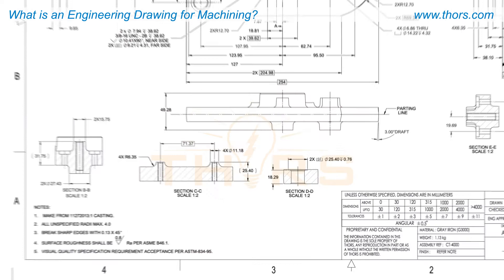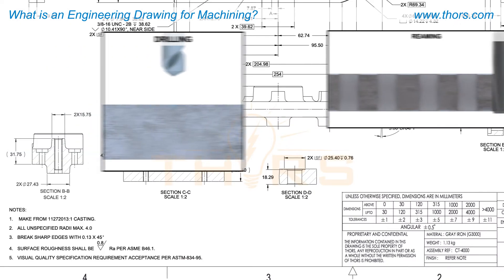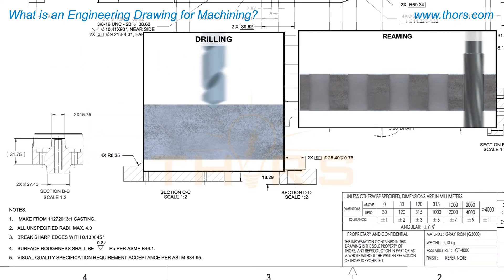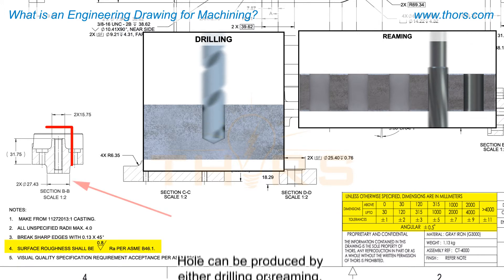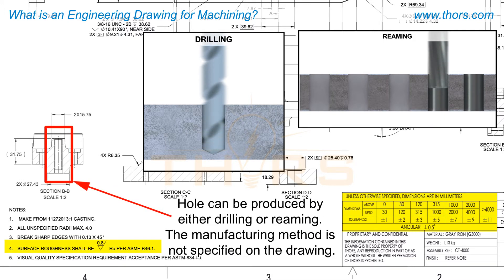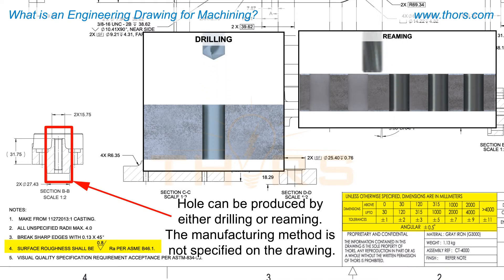While machining drawings provide specific requirements about the manufactured part, such as tolerance, surface finish, and material treatment, they don't often provide the specific methods that need to be used to create the feature.